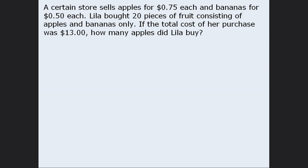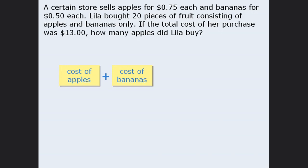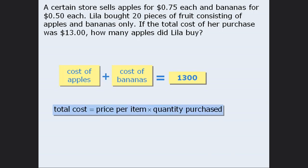Let's first solve this using one variable. Since the total cost of the fruit was $13, we can write the word equation: the cost of the apples plus the cost of the bananas equals $13, which we will write as 1300 pennies to avoid using decimals. To determine the cost of the apples and the cost of the bananas, we'll apply the following formula. To apply this formula, we need the price of each item, which we have, and we need the quantities purchased, which we don't have.